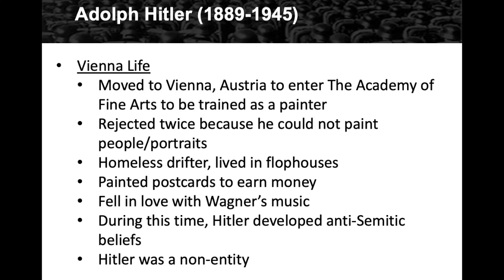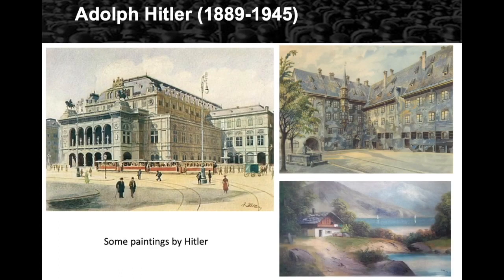This is really where his anti-Semitic beliefs began. During this time he was a non-entity — historians don't even know what was going on with him for several years. Here are some paintings by Hitler: he's actually a really good painter. You can see different mediums, including watercolor in the upper right. He has good perspective, but his figures and portraits weren't strong enough to get into the school. Clearly he was a good painter, but just not good enough for the academy.